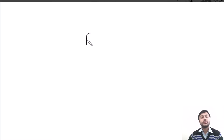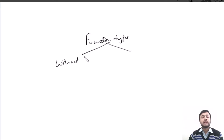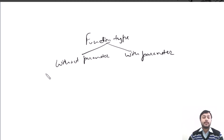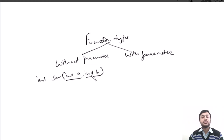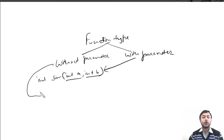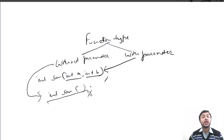Function types can be of two types. The first type is without parameters, that is without arguments. The second type is with parameters, that is with arguments. For example: int sum(int a, int b) — this is a with-parameter function. If you want a function without a parameter, there is no need to define any parameters.